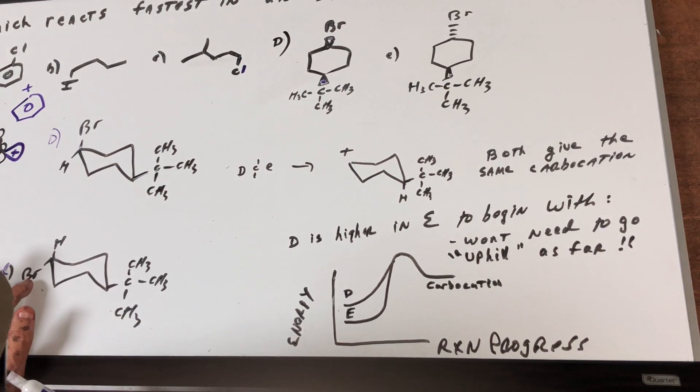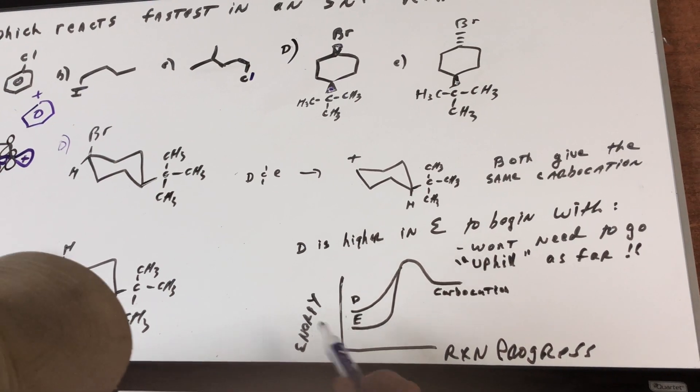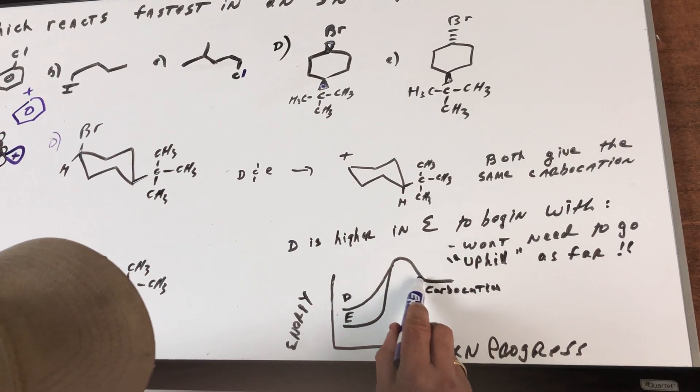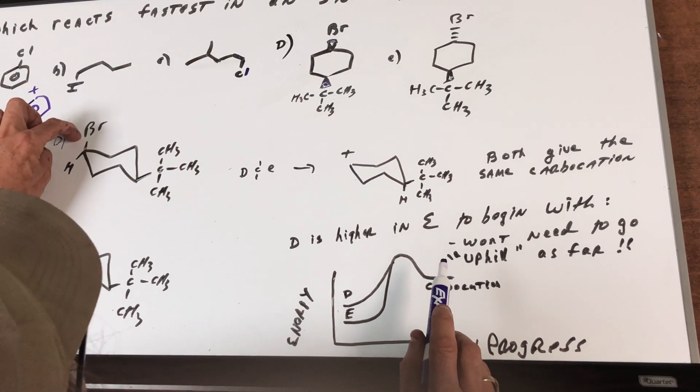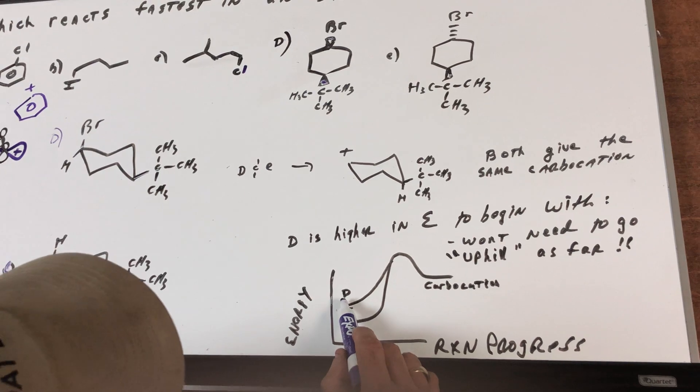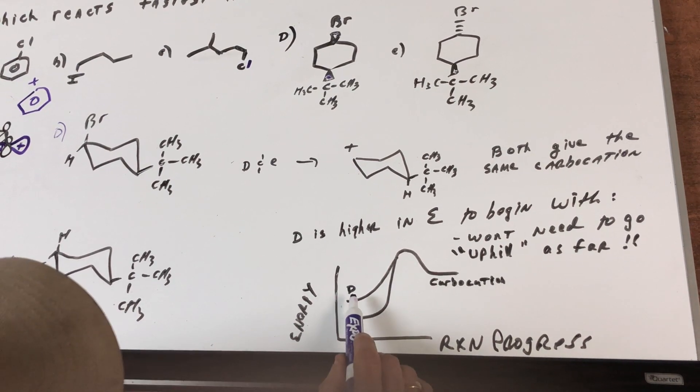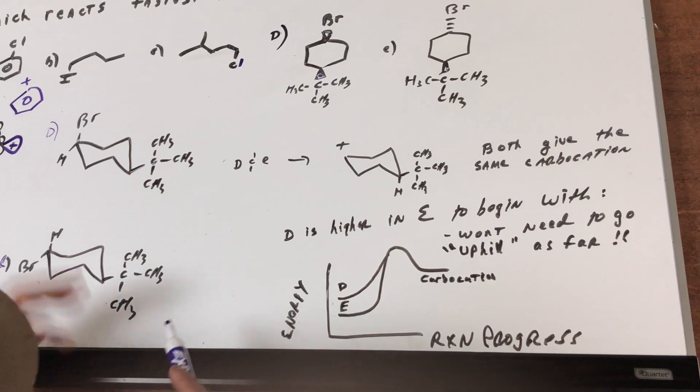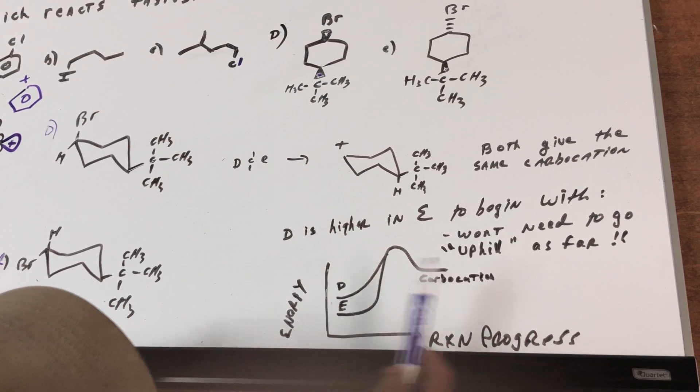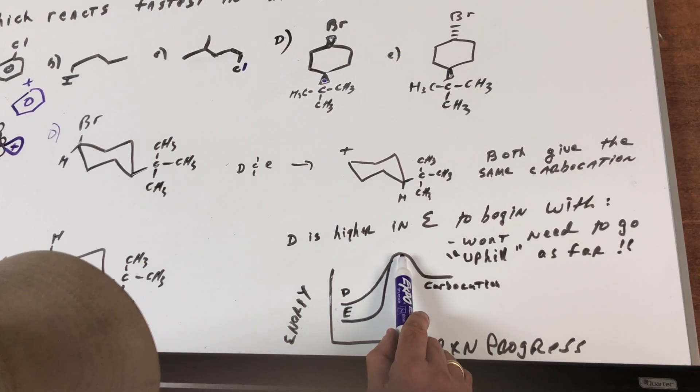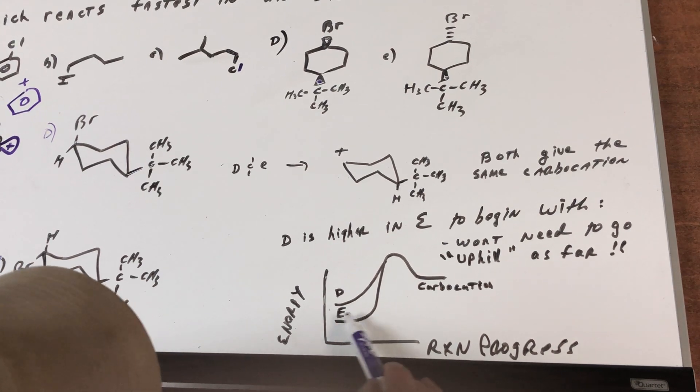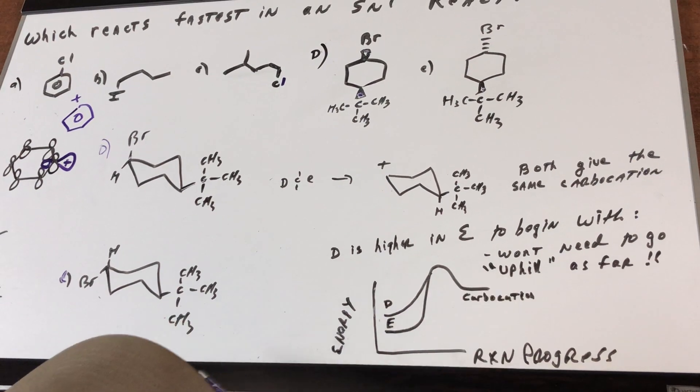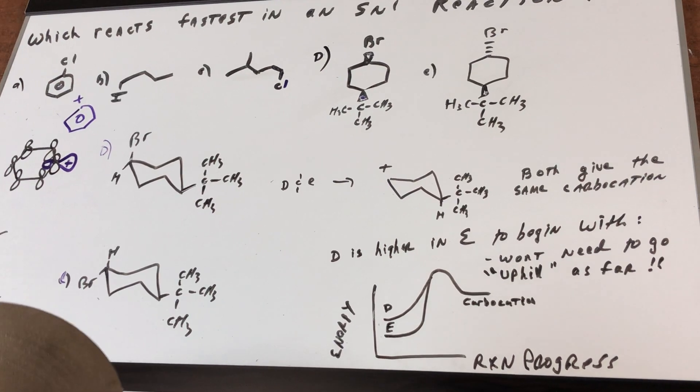If you first realize that the equatorial position bromine is the lower energy, and if I diagrammed it here it comes from a lower energy well, it's got to go over the transition state and form a carbocation. Whereas D, if the bromine is axial, it's going to be at a higher potential energy. Now I hope you can see in letter D the energy to begin with is higher, so because it's higher in energy, meaning axial is less stable, it won't need to go uphill as far. The more stable equatorially placed bromine is at a lower potential energy well. The guy at the higher energy starts off higher so it doesn't need to go as far, so therefore that would mean he would go faster.